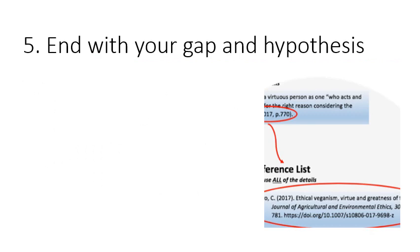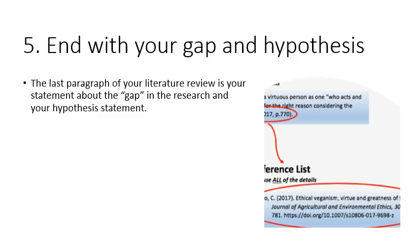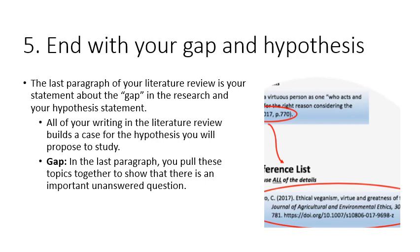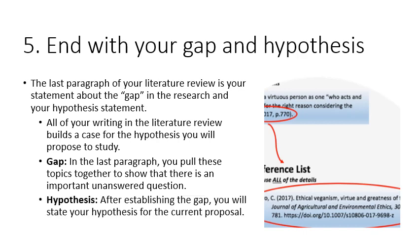Finally, you want to end your lit review — just before your methods section — with your gap and your hypothesis. You've already written these out at least in draft form, so now you're going to proofread them and make sure they're still valid. All of your writing in your lit review builds a case for the hypothesis you propose to study. In the last paragraph, you pull topics together to show there's an important unanswered question, then state your hypothesis as your last statement.